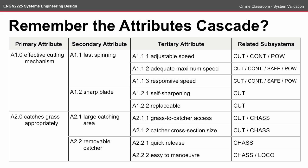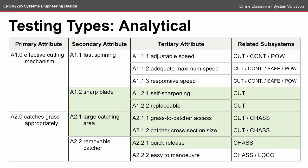Remember the attributes cascade for the first two primary attributes of the Cutsgrass customer requirement. The first step is identifying what attributes require which type of test. Here, analytical testing could probably take place on some of these attributes.